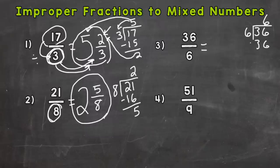6 times 6, 36. And we do not get a remainder. So our answer is going to be 6 wholes. If there's no remainder, you're just going to have a whole number answer. So 6.